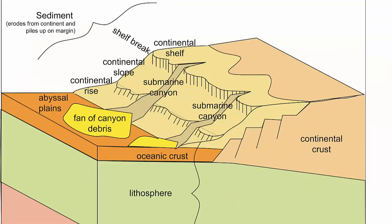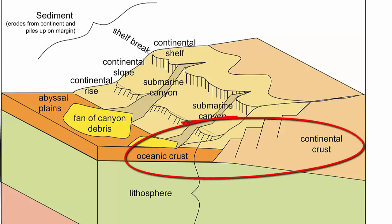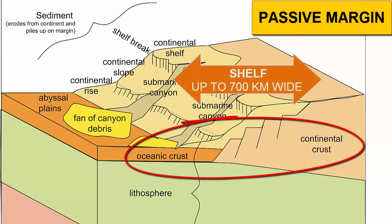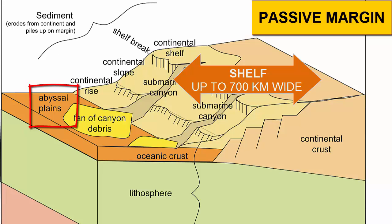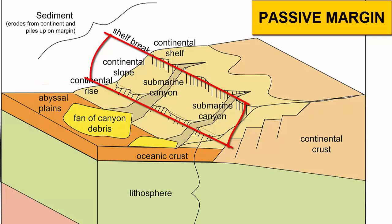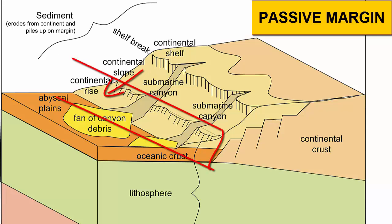Where continental margins have no active subduction, because the nearby ocean crust is fused to the continent — all part of the same plate moving together — we call them passive. At passive margins, the sediment that collects along the shelf can extend quite a distance offshore, sometimes up to 700 kilometers. The deep, flat seafloor that sits offshore of the shelves is called the abyssal plain. The continental slope extends from the shelf break down to the abyssal plains. The base of the shelf is covered in an apron of sediment that has fallen off the shelf above. That apron of sediment is called the continental rise.